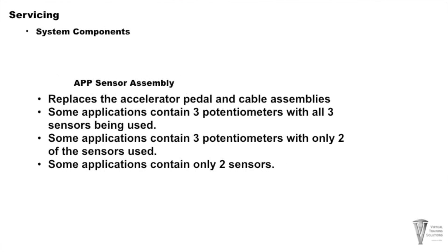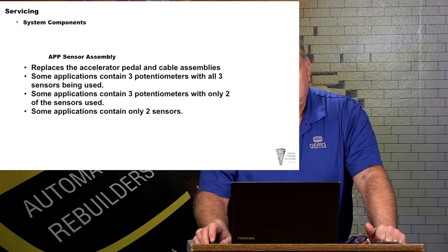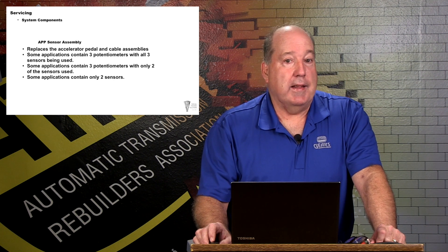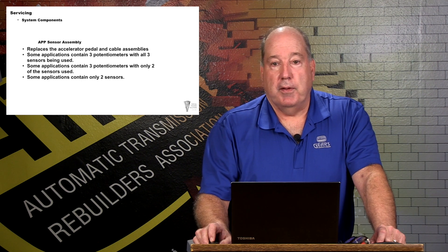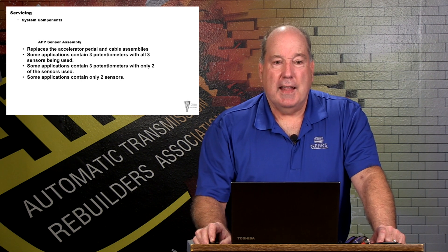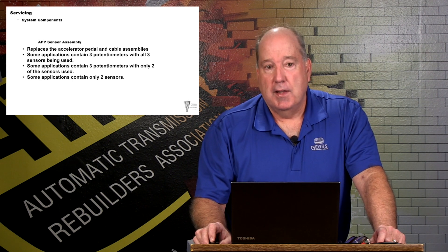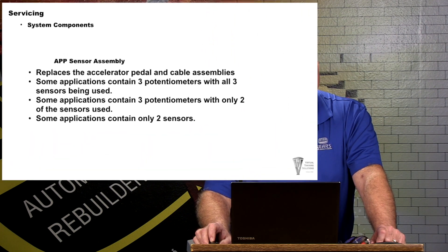When you look at the APP system, you're going to find it consists of a number of different things. You'll find an accelerator pedal that no longer has a cable attached to it — it has a module or housing containing potentiometers connected to the gas pedal. Out on the engine side, instead of a cable going to the throttle plates, there's an electronic motor at the throttle plates, plus a couple sensors to tell us the position of those throttle plates. Some applications have three potentiometers with all three sensors used at the APP, and some have three built in but only use two of them.